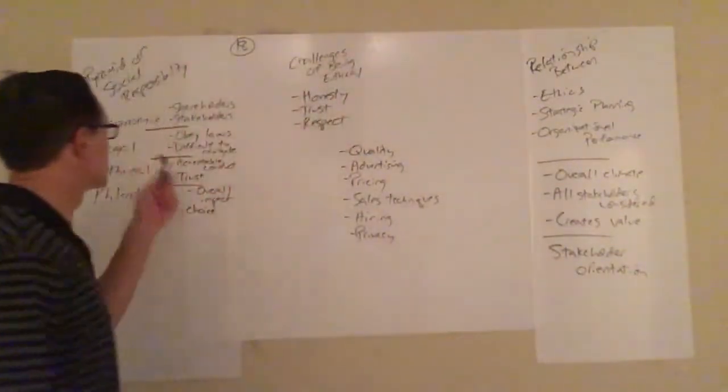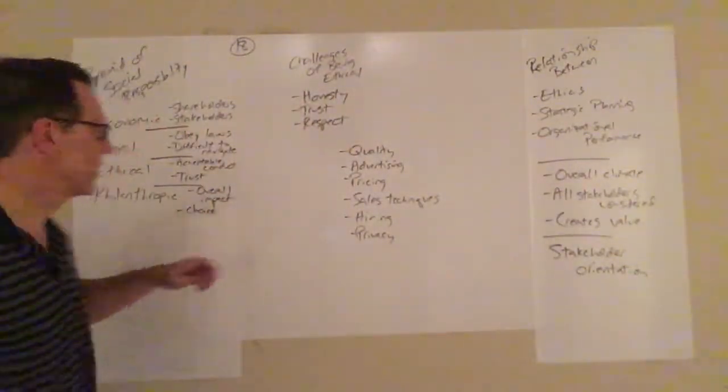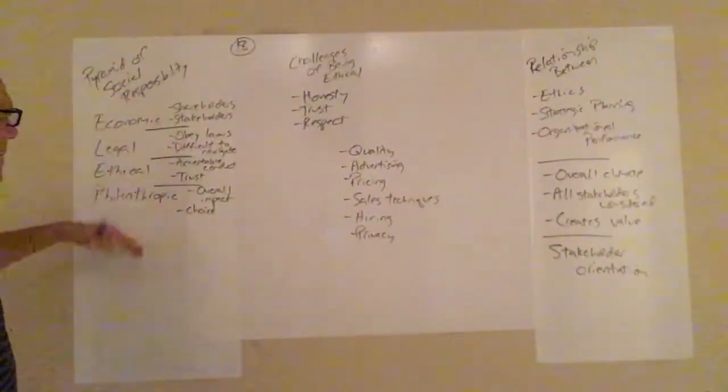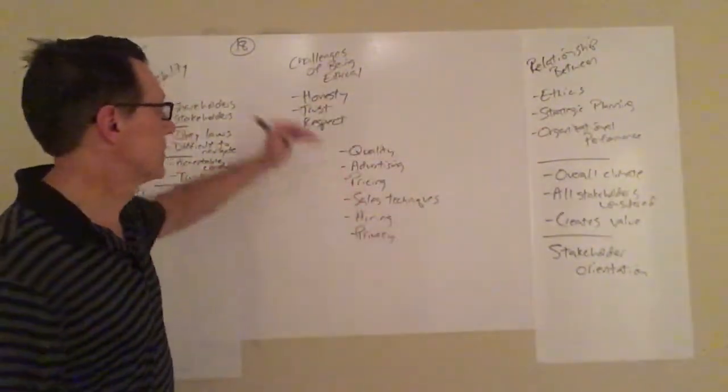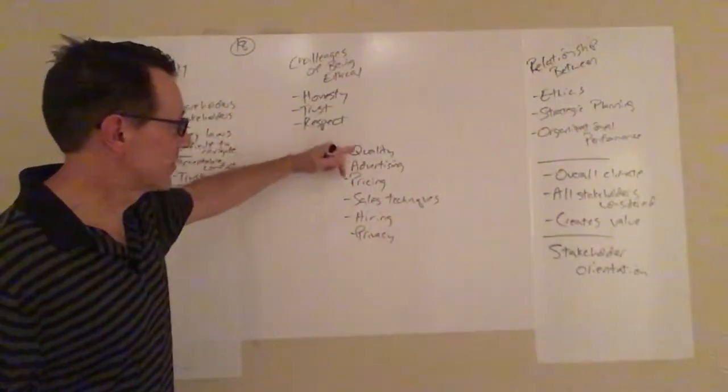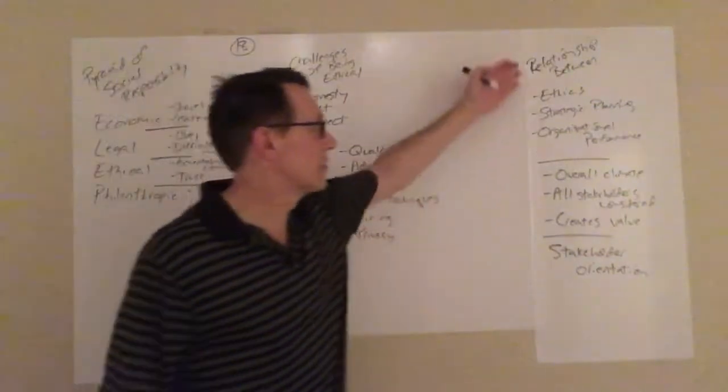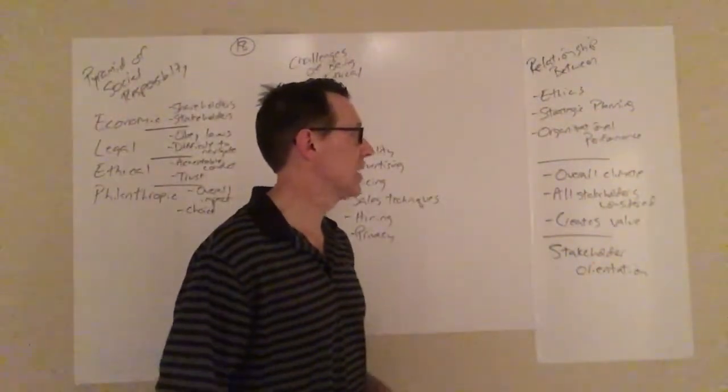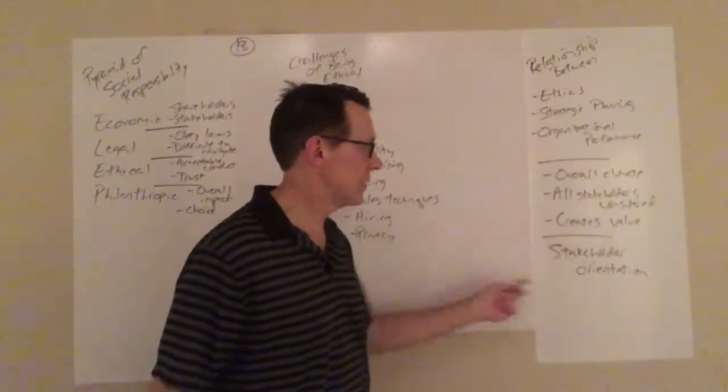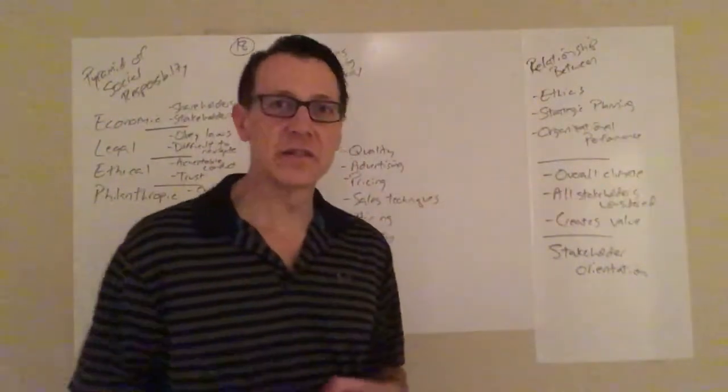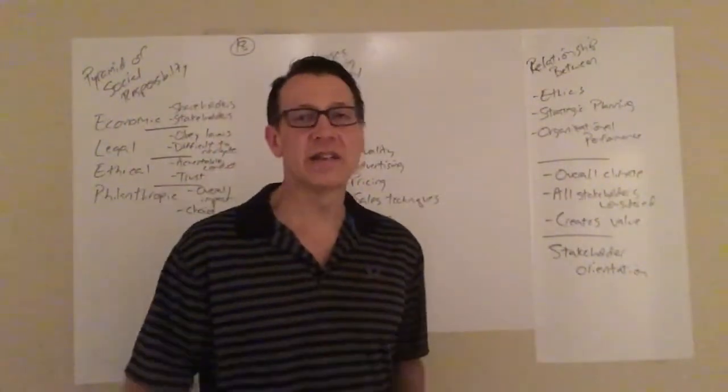So just to summarize, the pyramid of social responsibility: economic, legal, ethical, and if you can get to it, philanthropic. The challenges of being ethical: honesty, trust, and respect, and of course, all areas of business and how do you factor them in. And then, of course, the relationship between ethics, planning, and organizational performance, it's an overall climate that adds to your stakeholder orientation and stakeholder value.